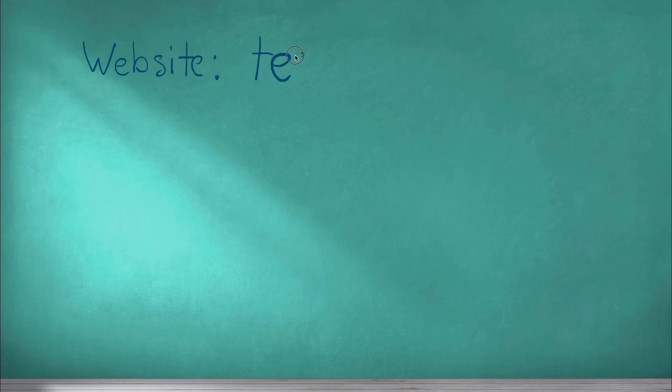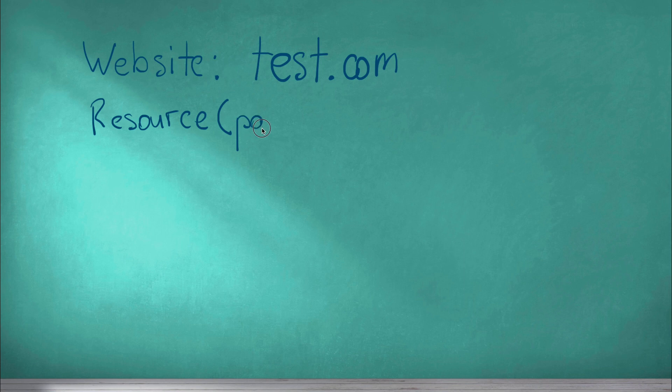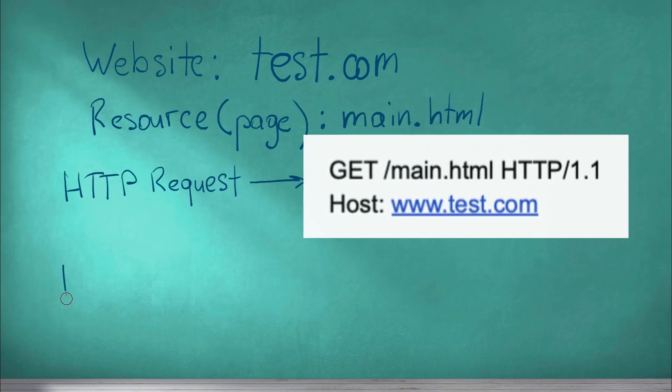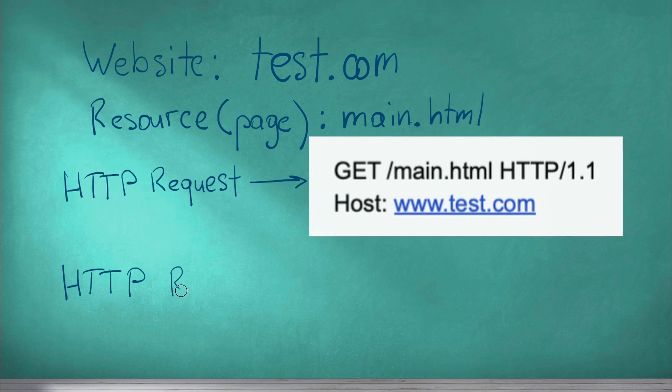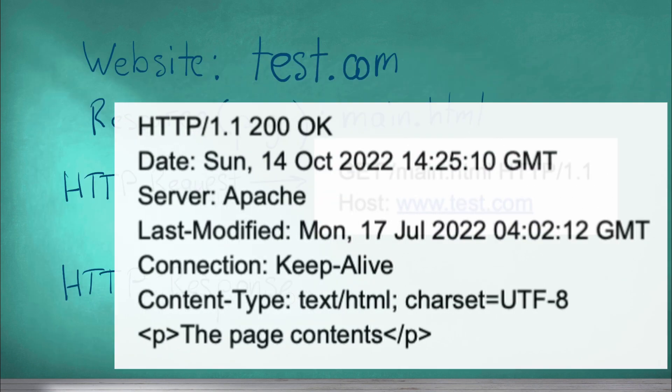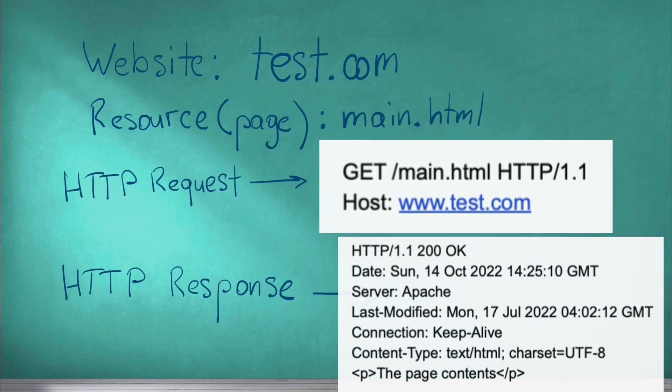Let's take an example that we need to open a main.html page from the site test.com. Below is how the request from the browser should look like to get the desired main.html resource. And the response from the web server should look like this.